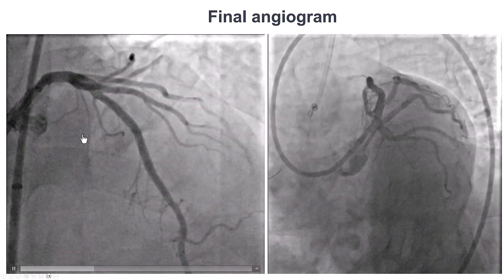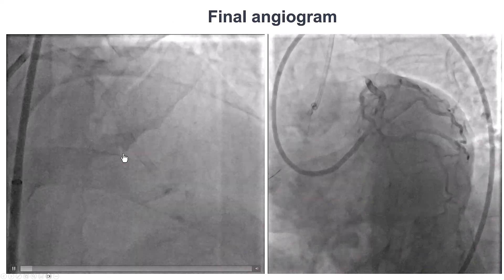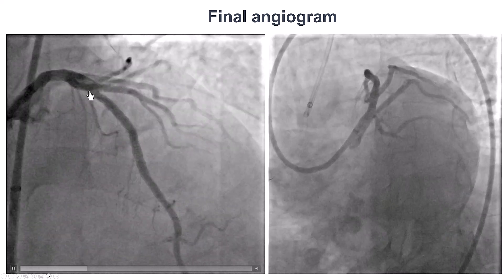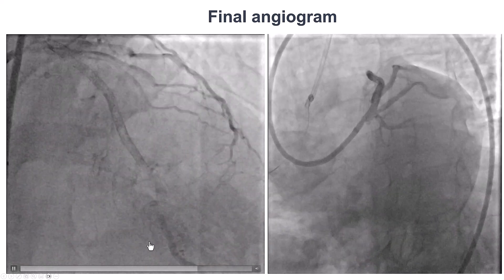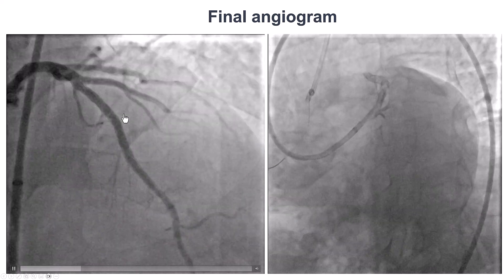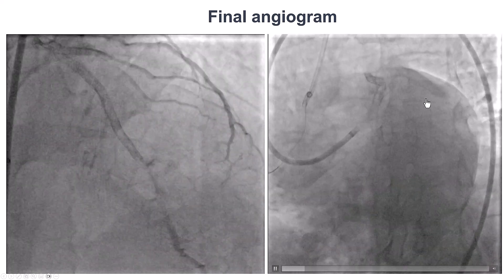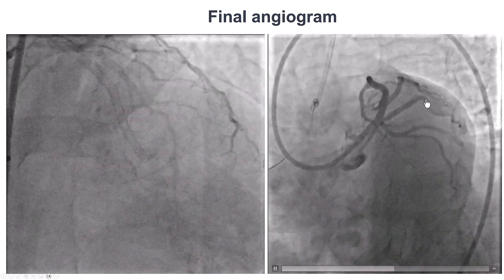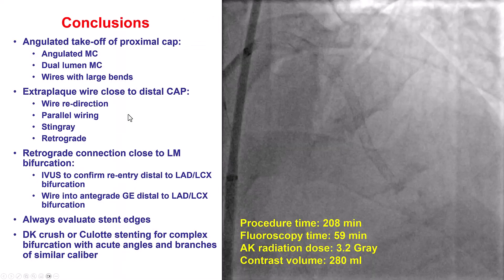This was the final result, with nice flow into the LAD. We have preservation of the septal branches and an excellent result also in the diagonal branch. This was confirmed using intravascular imaging.